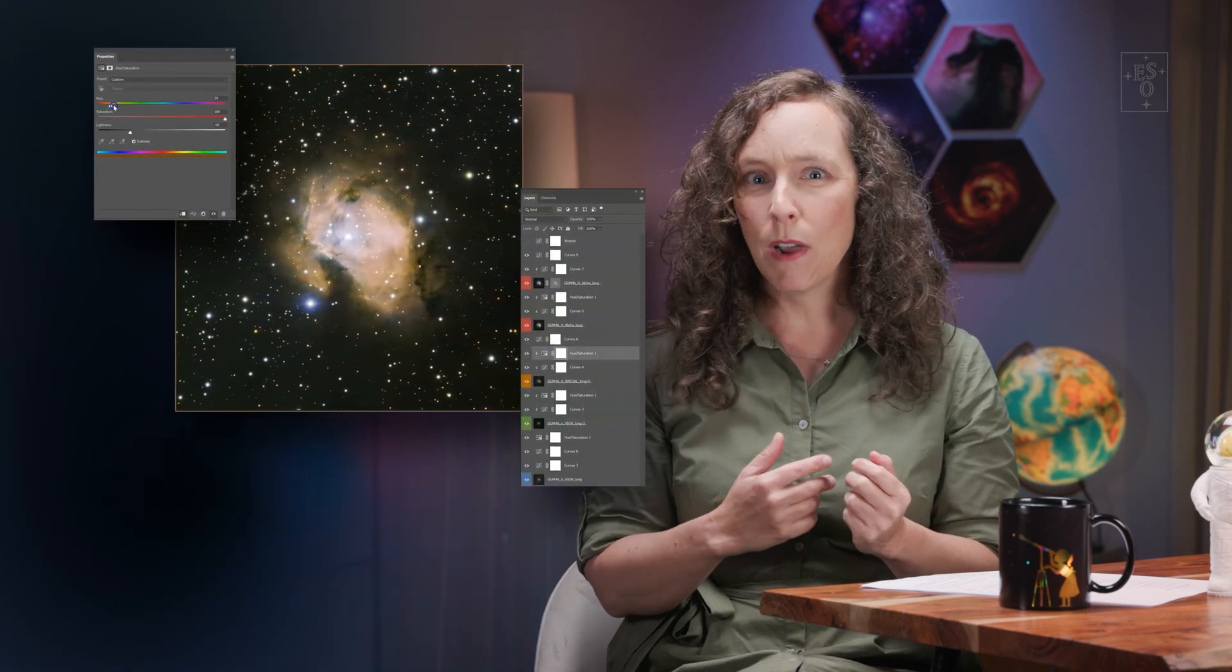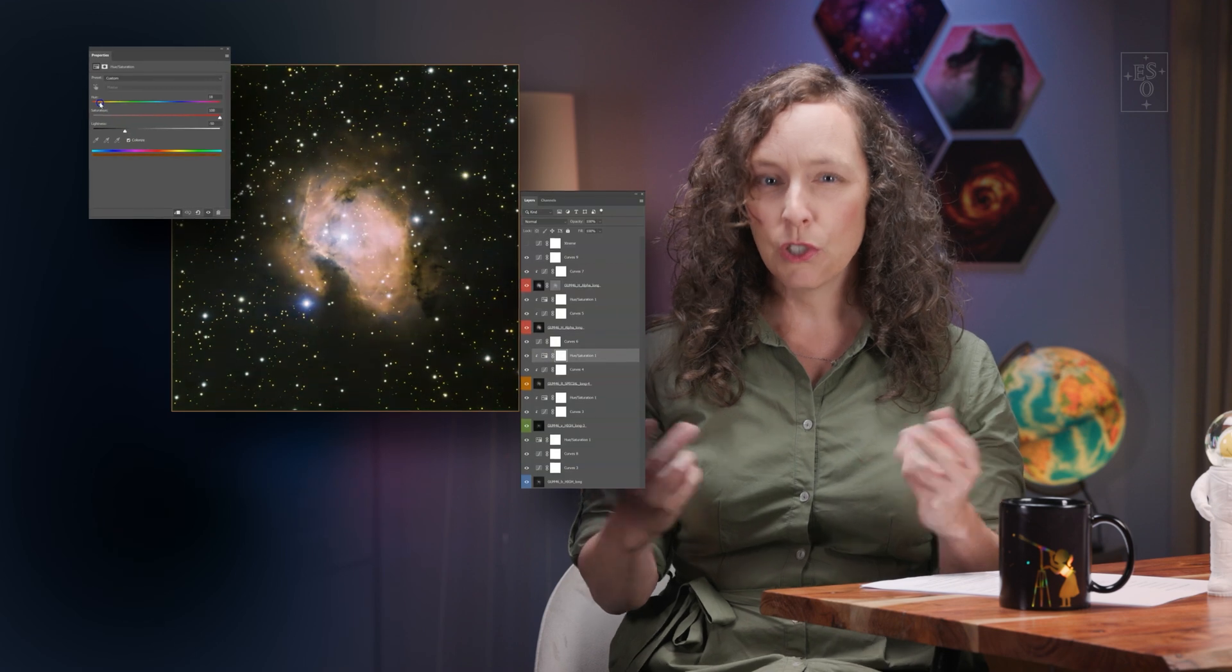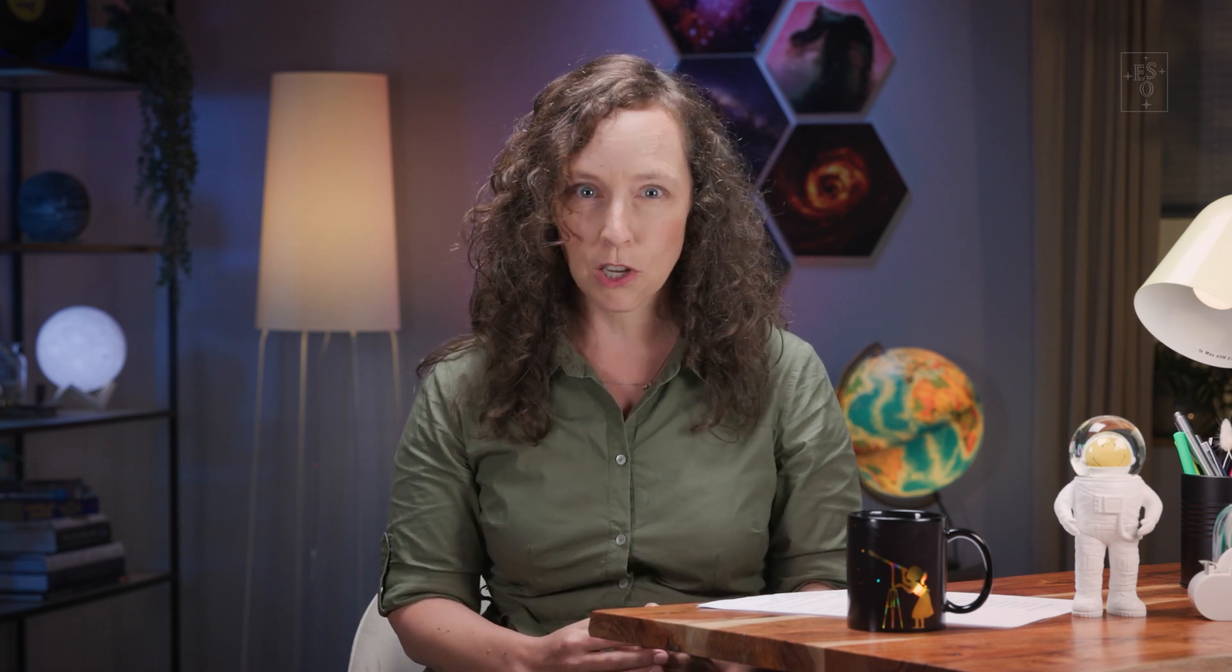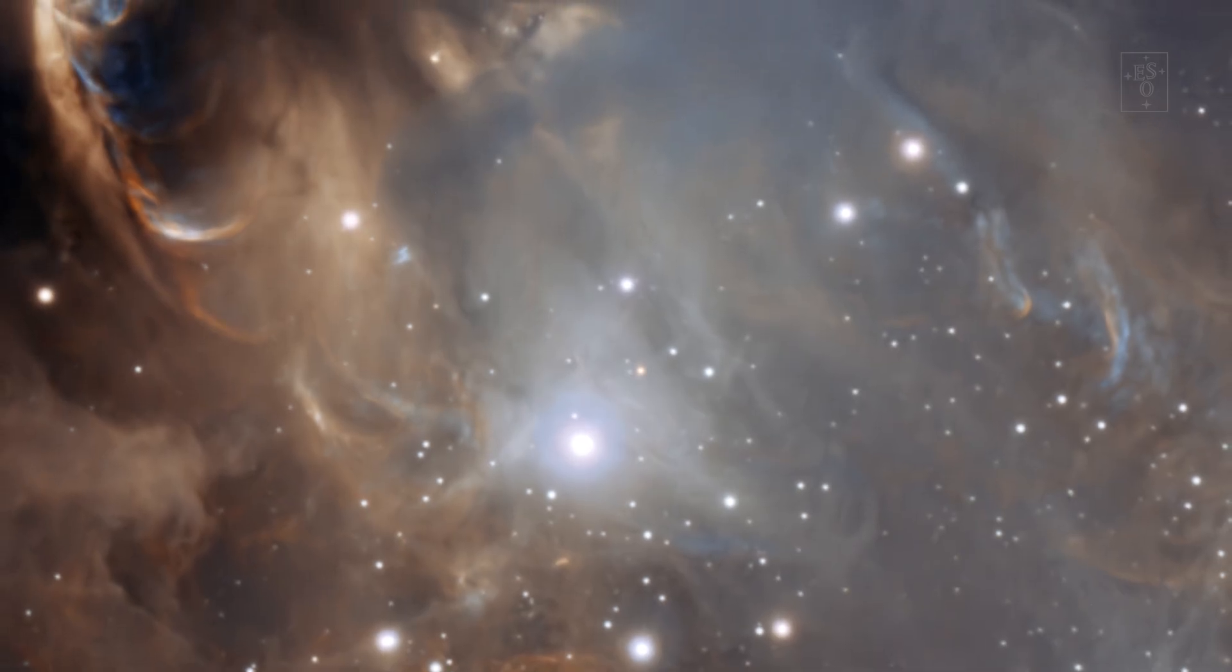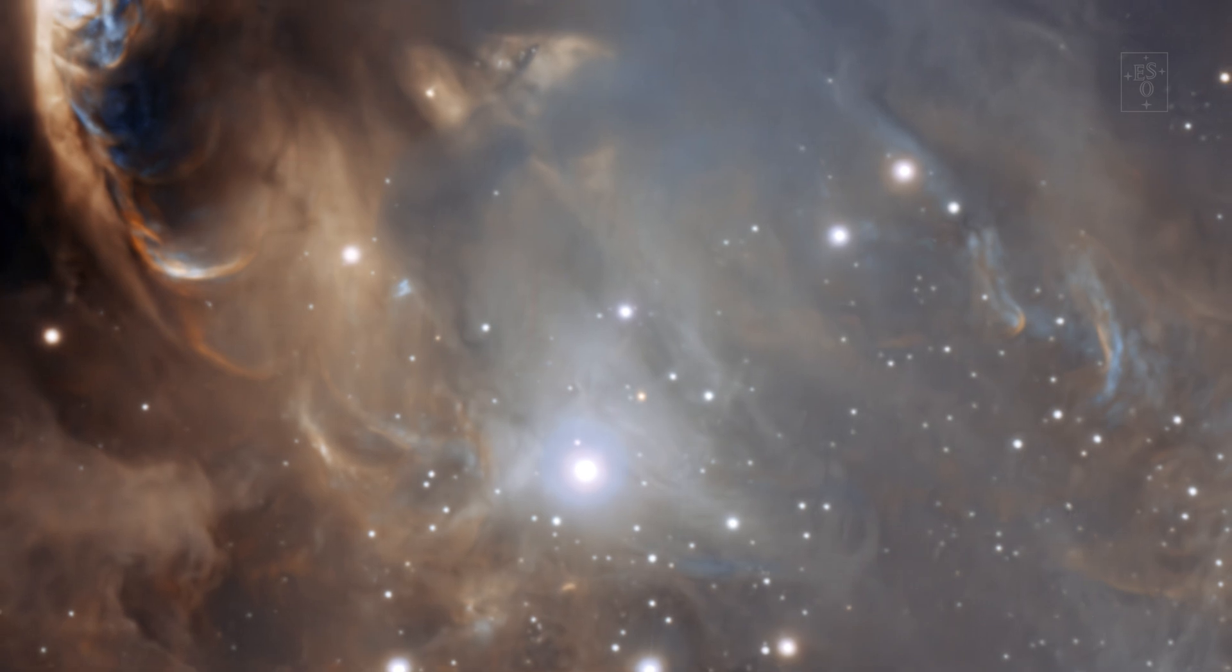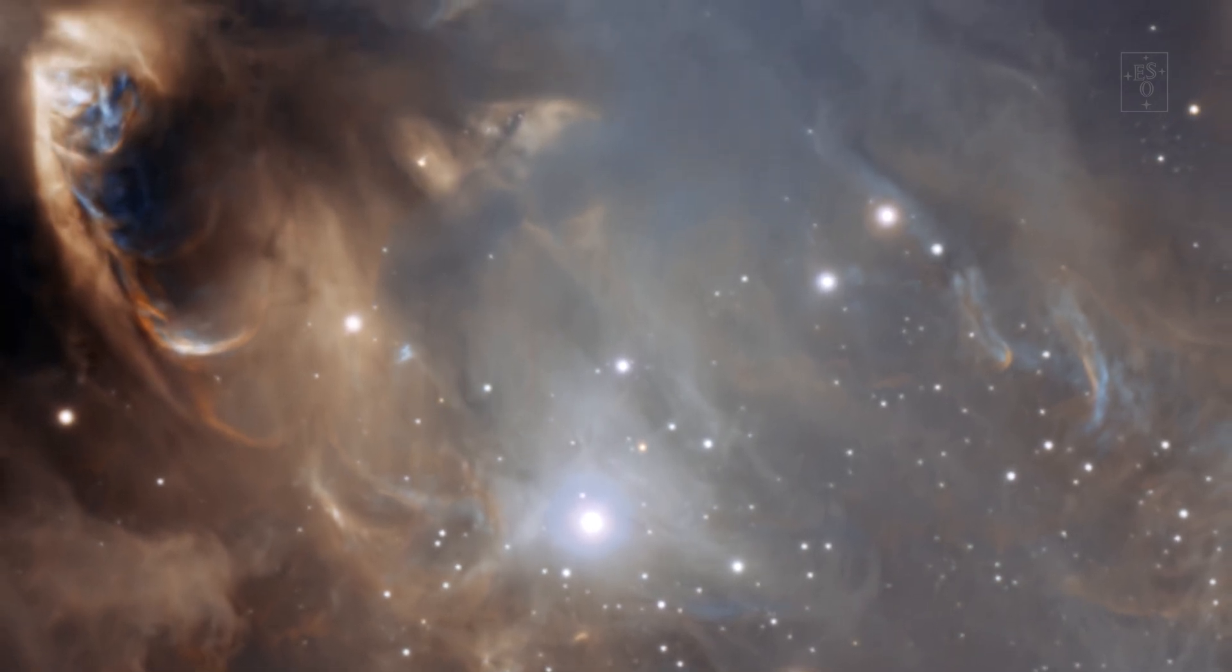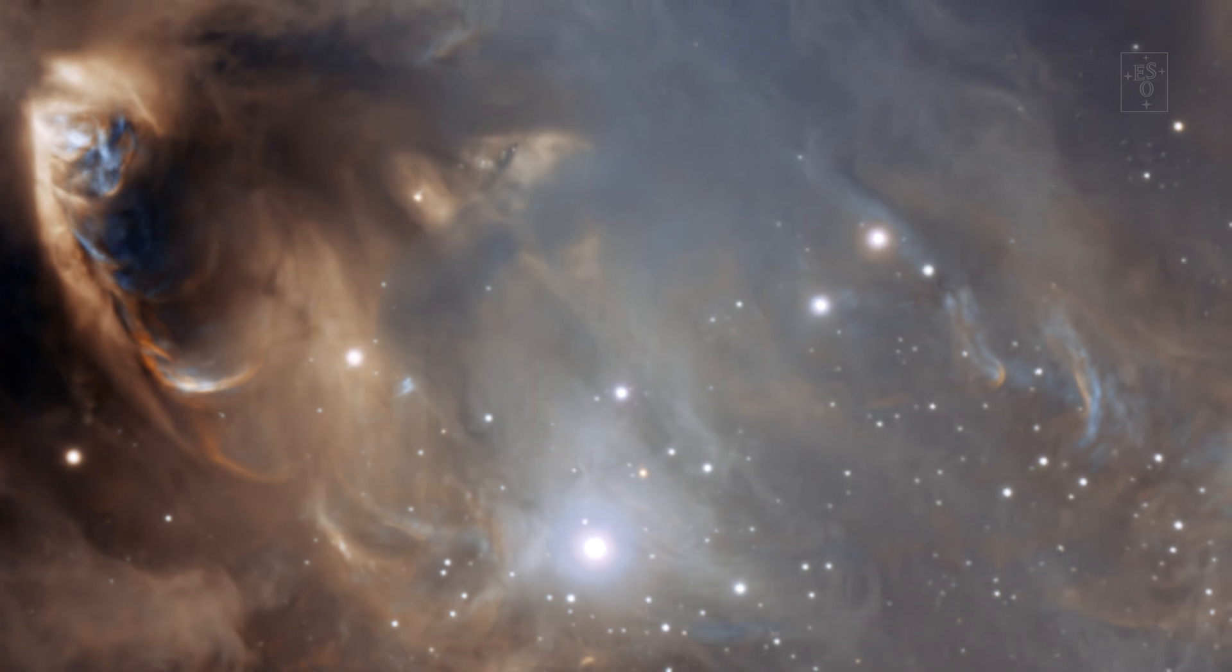If they do this the same way our eyes would see it, this is called a true color image. But the thing is, very often a true color image is not the best way to represent or study an astronomical object. Take, for instance, this image taken with ESO's Very Large Telescope. What we see is a cloud of gas and dust in which stars are beginning to form. The light from these stars excites the atoms in the cloud around them, making them shine.